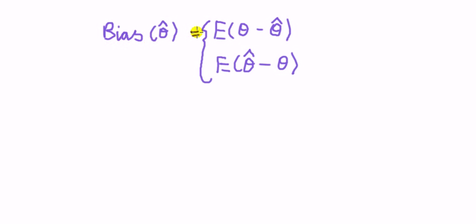The bias of an estimator is equal to the expected value of the difference between the parameter and the estimator, or the other way round, the estimator from the parameter? Or does it not matter?